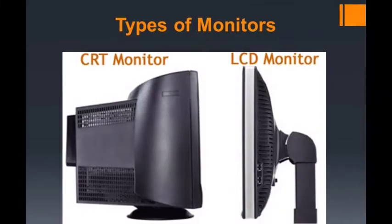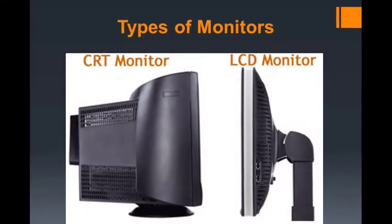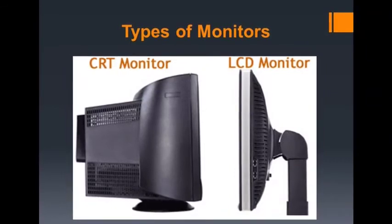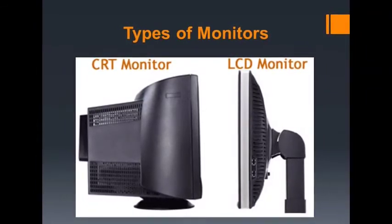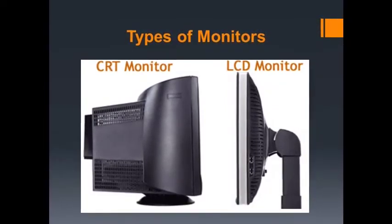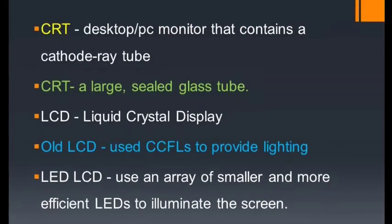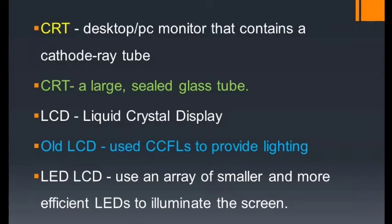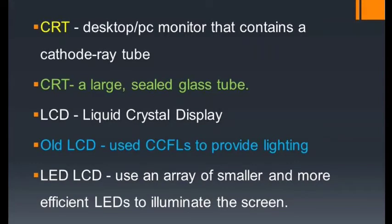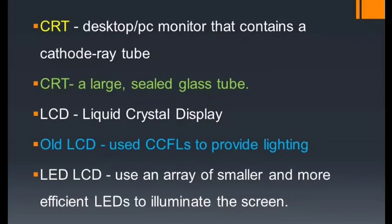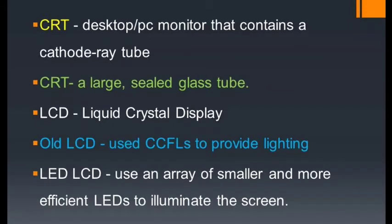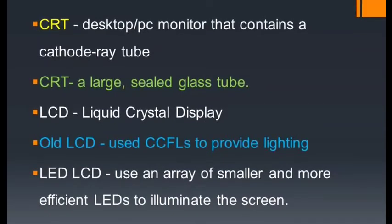There are two types of monitors used in computers: CRT and LCD. CRT stands for cathode ray tube and LCD stands for liquid crystal display. CRT is a desktop or PC monitor that contains a cathode ray tube, which is a large sealed glass tube. LCD is a desktop or PC monitor that uses liquid crystal display to produce images.